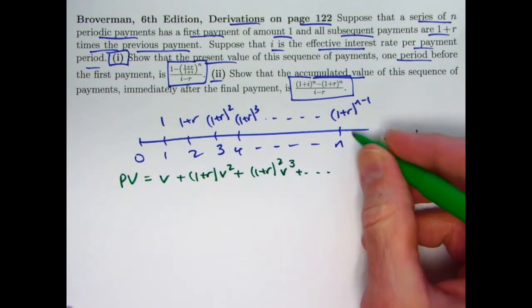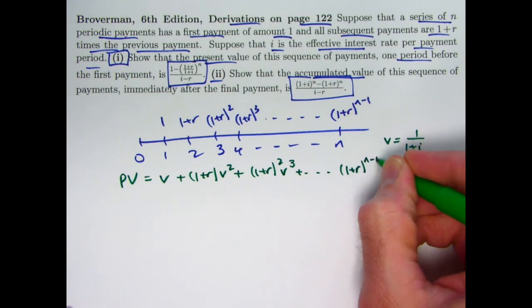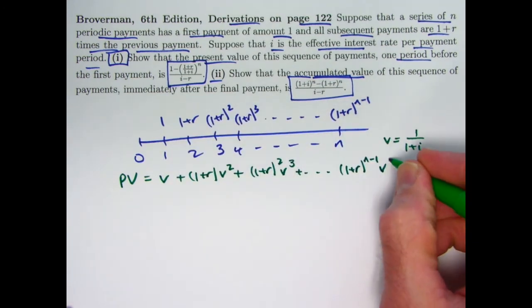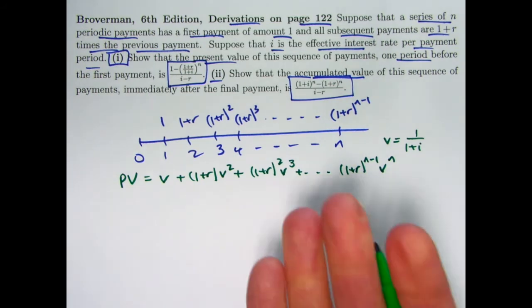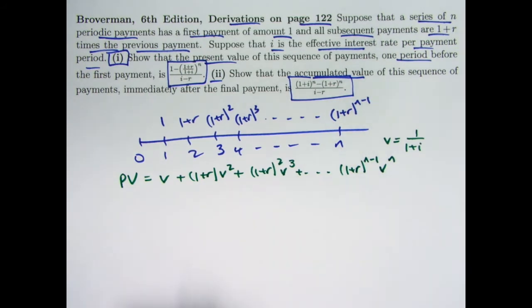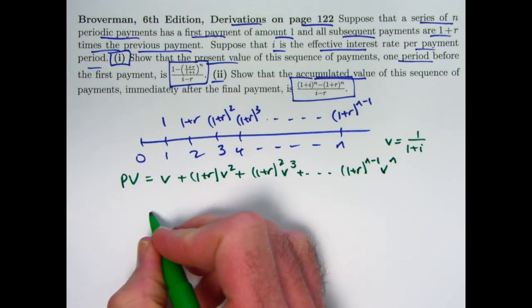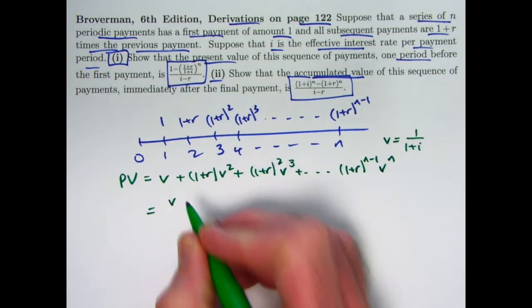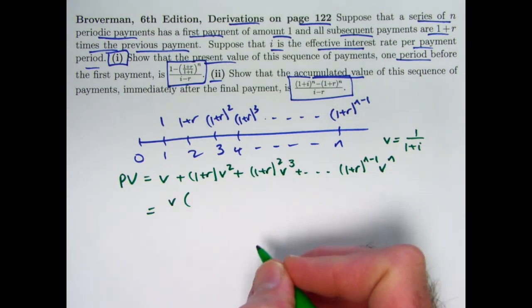The last payment of (1 plus r) to the n minus 1 goes back n periods, so it gets multiplied by v to the n. What you see here is a finite geometric series with first term equal to v and common ratio equal to (1 plus r) times v.